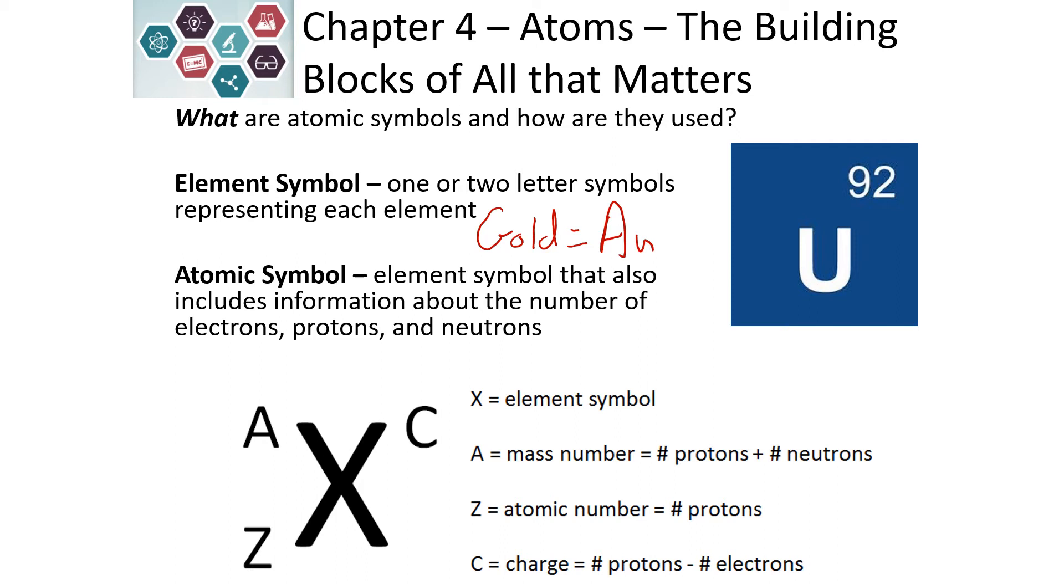We can represent the atomic symbol by using that elemental symbol, where you would see the X. And it also includes information about the electrons, the protons, and the neutrons. So the Z represents the atomic number, the number of protons, the number that we see on the periodic table. In our example, our Z in our uranium block would be 92. The A represents the mass number, which is the protons plus the neutrons. And the C is the charge of the element, which is protons minus the electrons.